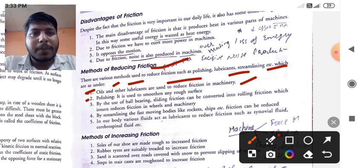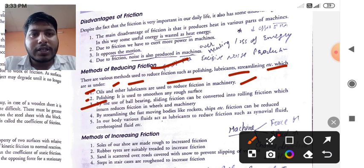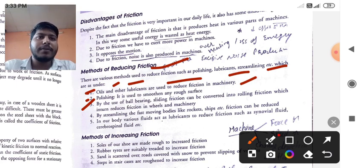Second one is polishing. It is used for smoothing rough surfaces. Third one, by the use of ball bearing, sliding friction can be converted into rolling friction, which in turn reduces friction in wheels and machinery.